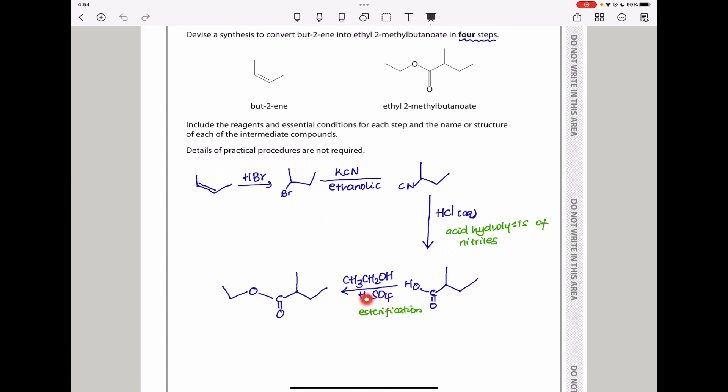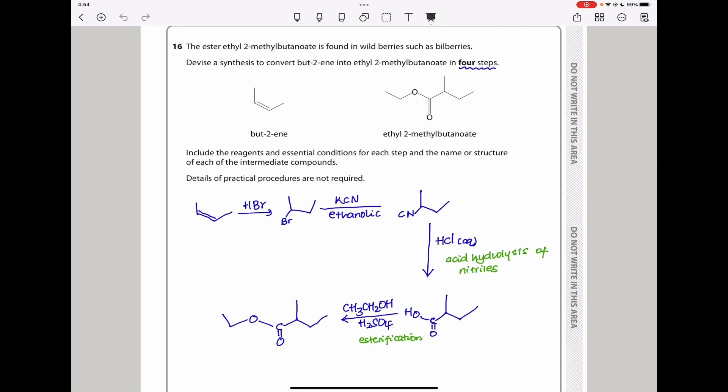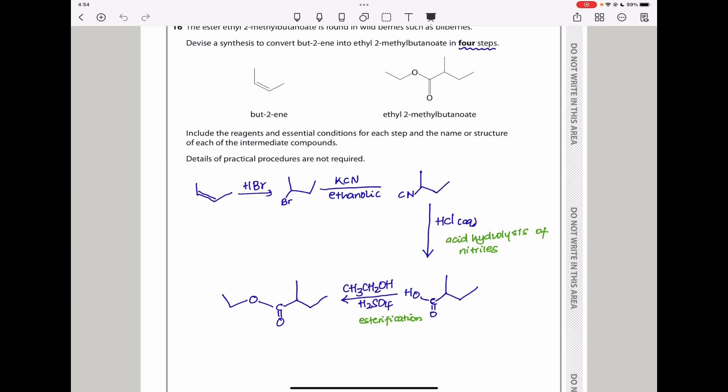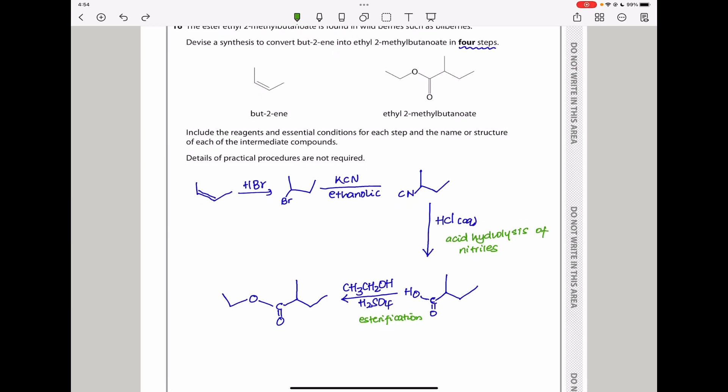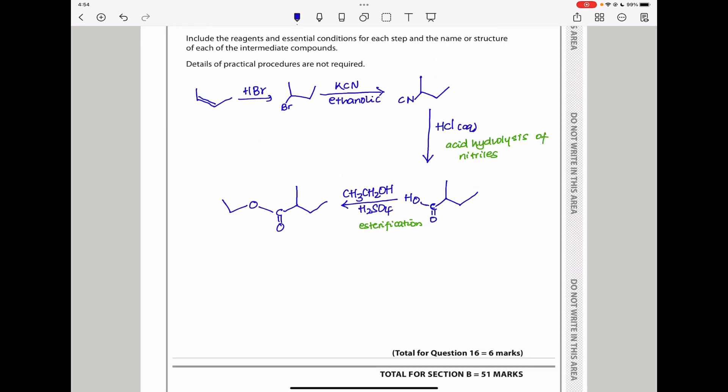Remember they said they wanted us to convert in four steps. So that is how you would produce ethyl-2-methylbutanoate in the four steps required. This is the end of Question 16. Let's continue to Question 17.